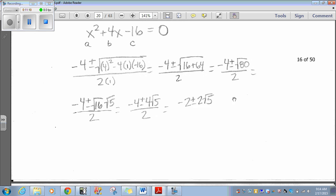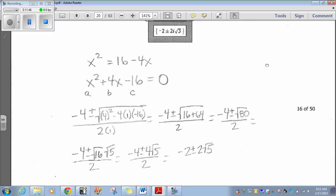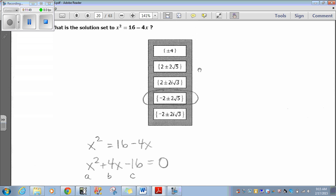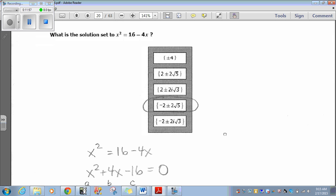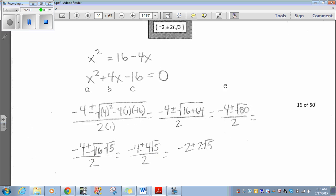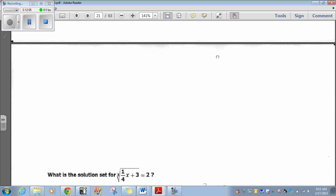So, negative 4 plus or minus the square root of 16 plus 64 is 80, over 2. Now, radical 80, you need to know how to simplify your radicals. I would break down radical 80 as the square root of 16 times the square root of 5. So, negative 4 plus or minus the square root of 16 times the square root of 5, over 2. And then, radical 16 is simply 4 when we simplify it. So, that's going to be negative 4 plus or minus 4 radical 5, over 2. Then, I can simplify this because negative 4 over 2 is just negative 2. And then, plus or minus 4 over 2 is just 2. So, negative 2 plus or minus 2 radical 5. So, with something like this, you need to know how to use the quadratic formula and simplify radicals to answer.